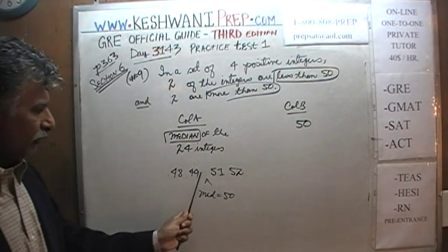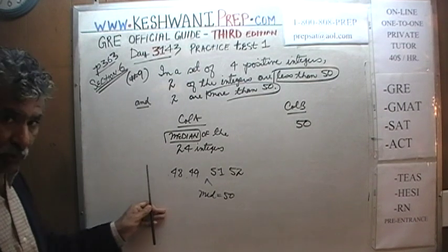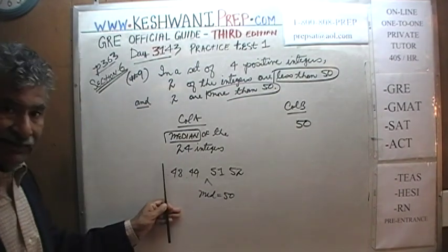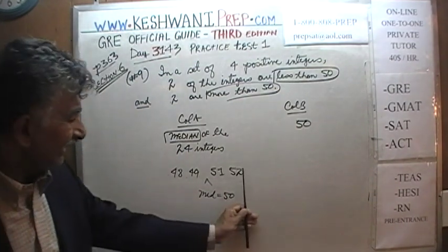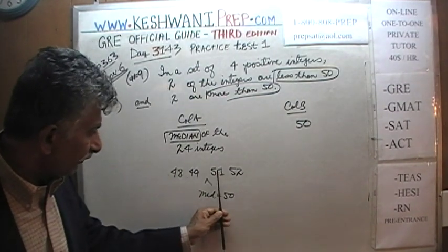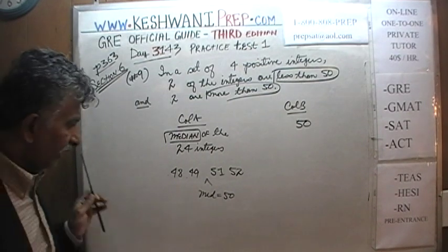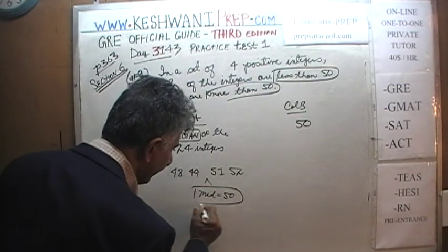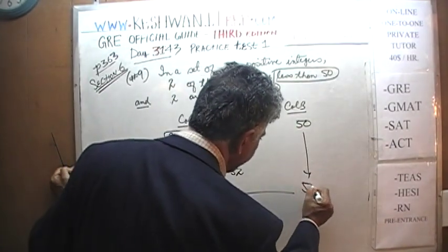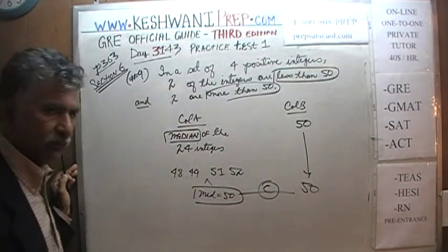The median here is 49 plus 51 divided by 2, which equals 50. That would not have changed whether we have 10 more on each side or 10,000 more — as long as the middle two numbers are 49 and 51, that's all that matters. So in this scenario, the median is 50, and we compare it against column B, which is also 50. The answer in this scenario is C.